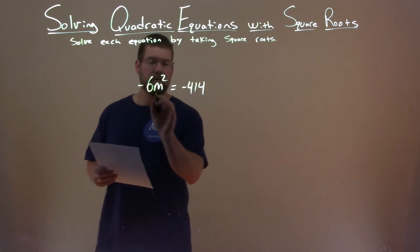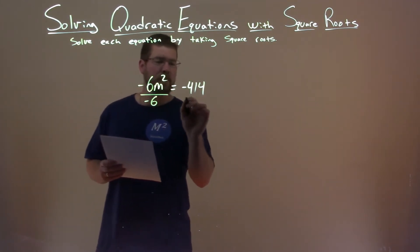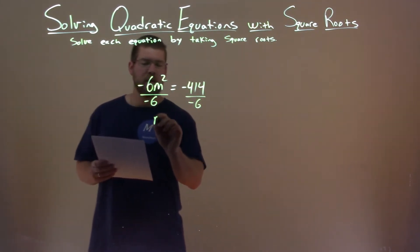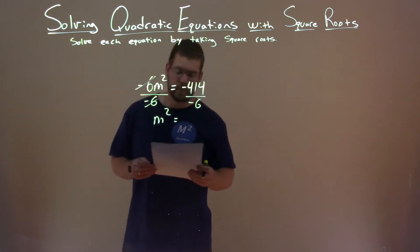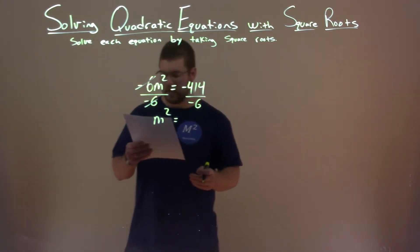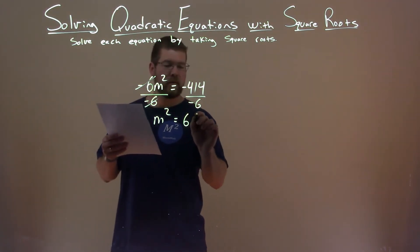It's being multiplied by a negative 6. So, if I divide negative 6 to both sides, the negative 6s cancel, and we have m squared now by itself. Negative 414 divided by negative 6 is a positive 69.